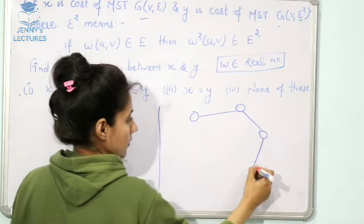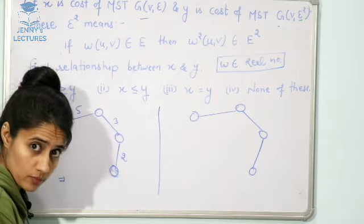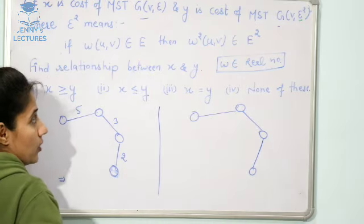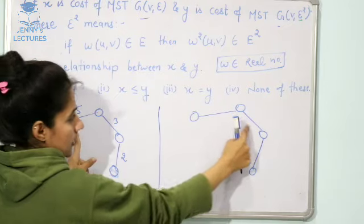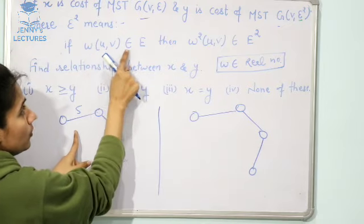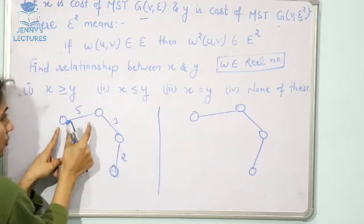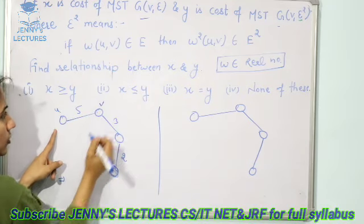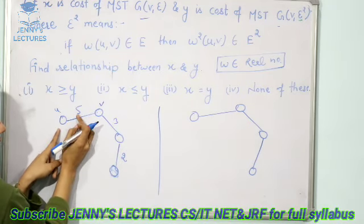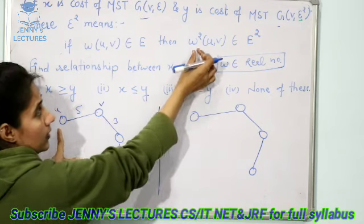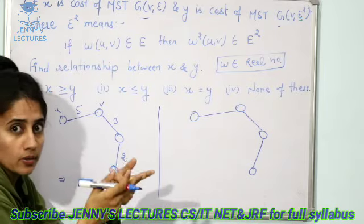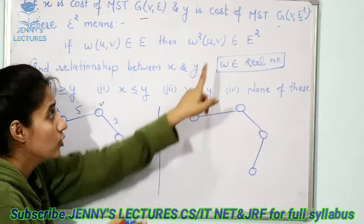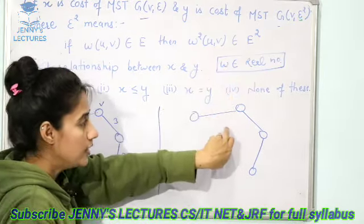Now, what is the relationship between the weight of these edges? Weight of (u,v) belongs to E. See, suppose this one is u, this one is v. Weight of (u,v) is 5. 5 belongs to E. Then w² of that edge means 5 square = 25. 25 would belong to E².